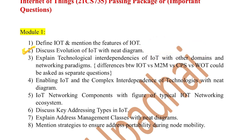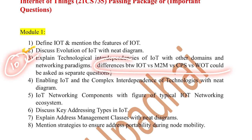Next, we have the technological interdependencies of IoT with other domains and the networking paradigms. We can ask the differences between IoT and machine-to-machine, cyber physical systems, internet of environment, internet of people, and all those things. You have to explain what are the networking paradigms and what they comprise of. This is again a 10-mark question and the differences could be asked here.